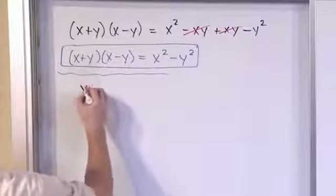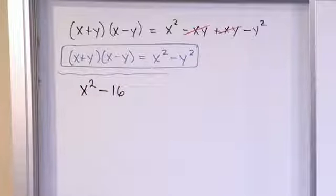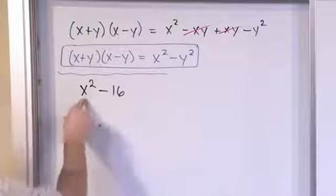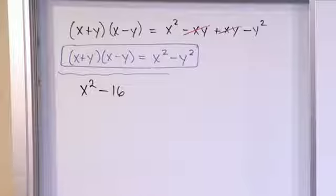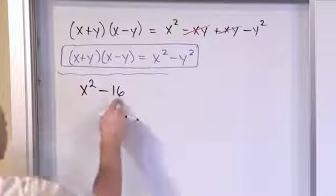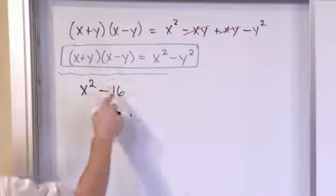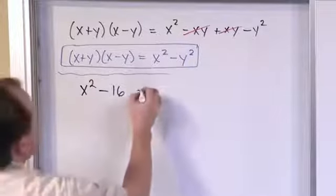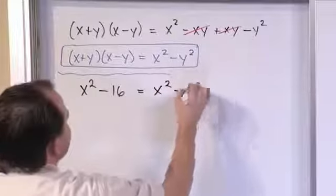What if you have the expression x squared minus 16? And I say factor that. And you look at that and say, I don't know how to factor that, because there's an x here, there's numbers here, there's nothing common. There's no way I can factor this expression. But then you remember, 16 is what we call a perfect square, because 4 times 4 is equal to 16. So really you can rewrite this as x squared minus 4 squared.